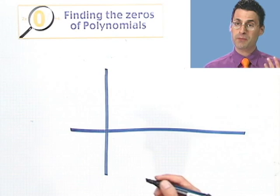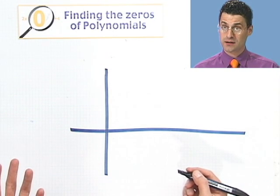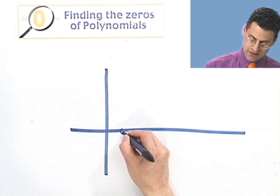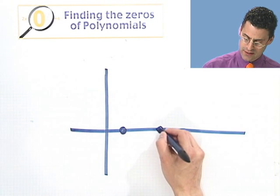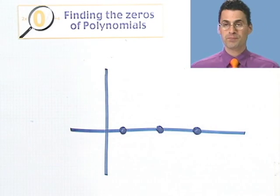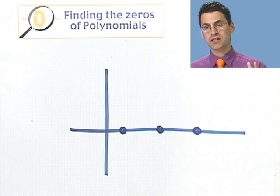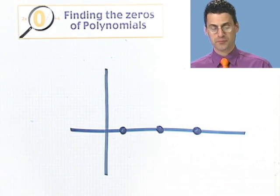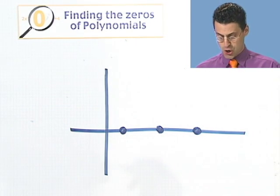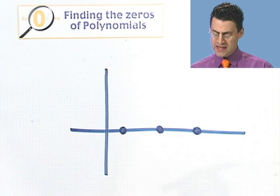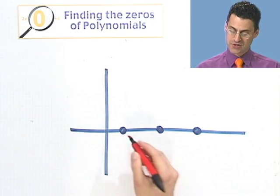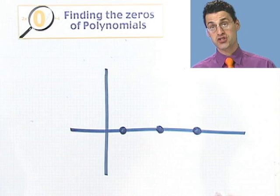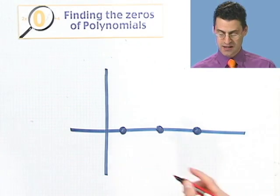Suppose I say to you, hey, I'm thinking of a cubic polynomial and it has a zero right here, right here, and right here. Do you know that cubic polynomial for certain? Well the answer is no, because there are many cubic polynomials that actually have these as roots. Let me show you some visually.